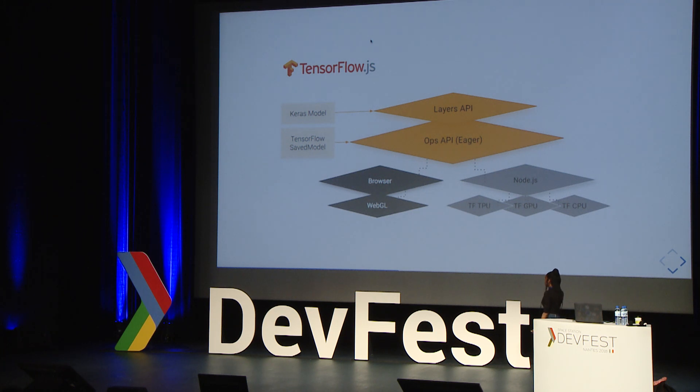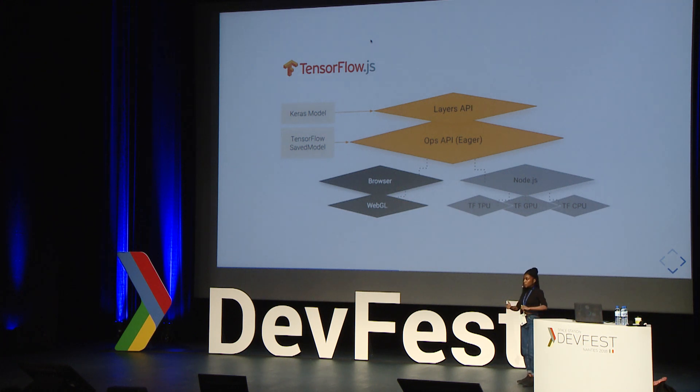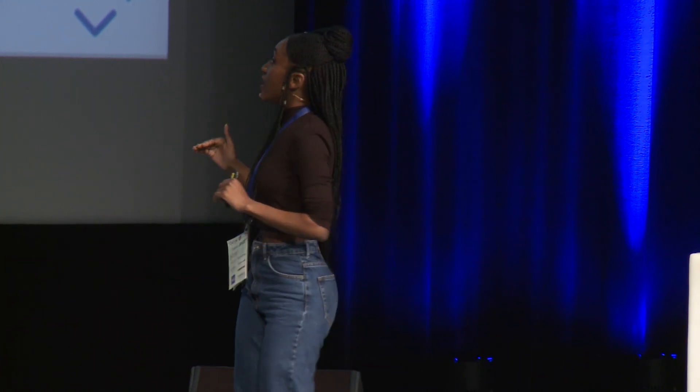Here is the architecture of TensorFlow.js. We have two main parts. The Operations API — basically where you have access to all the low-level operations, similar to TensorFlow for those that know it. And the Layers API — it's more of an abstraction level over the Operations API, and it's more similar to Keras. It makes your life easier.